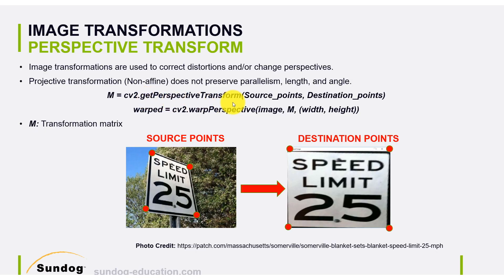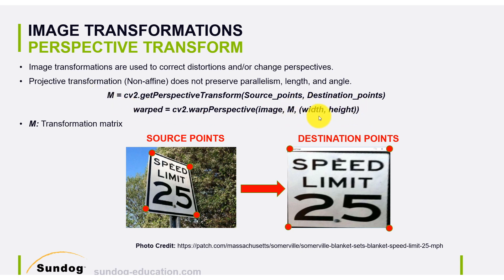From the source and destination points, I get what we call an M matrix, which we compute using getPerspectiveTransform. We provide source points of the object and destination points — what I want those points to be — and getPerspectiveTransform from OpenCV returns the M matrix, which is the transformation matrix. Then, similar to applying rotations or translations, we use warpPerspective: we provide the image, the matrix, and the dimensions of the output image, and that gives us the warped image.